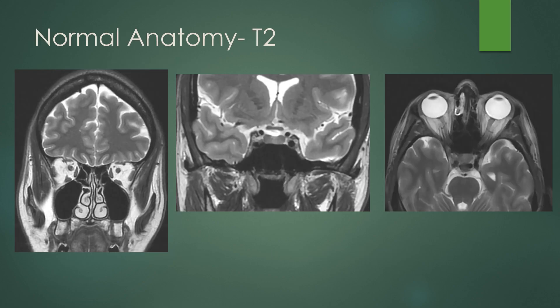On normal T2-weighted imaging, you should have the globes themselves with the ocular lenses. You have the optic nerves within the optic nerve sheath complex. You have the extraocular muscles — superior and inferior rectus muscles, medial and lateral rectus muscles, and the superior oblique muscle. Here you can see the superior ophthalmic vein. The retroorbital fat is hyperintense on T1 and T2.